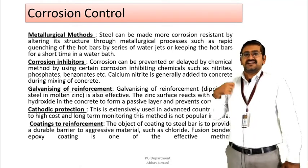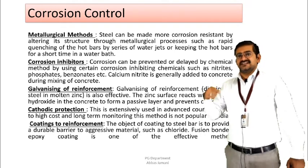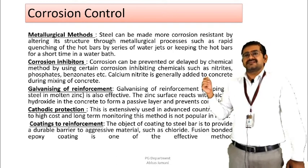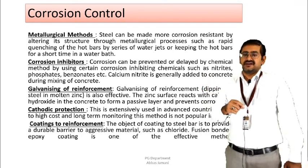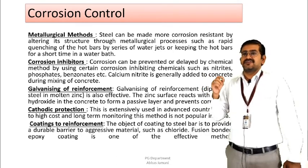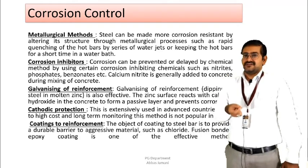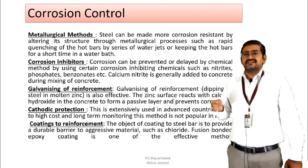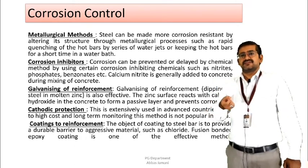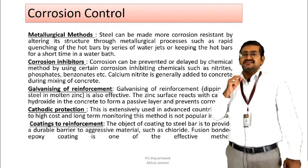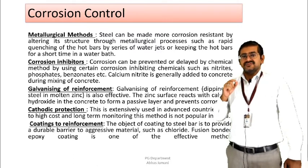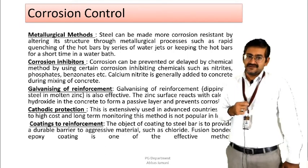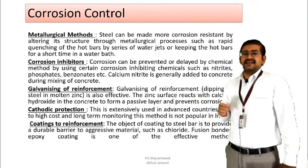In the case of galvanizing of reinforcement, an additional layer of zinc is formed. Whenever concrete cracking takes place and foreign minerals try to reach the reinforcement surface, they first interact with the zinc, then later with the passive layer of the reinforcement, and then the reinforcement itself. This thickening of the protective layers means the initiation of corrosion can be delayed.